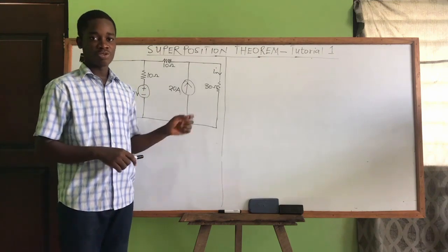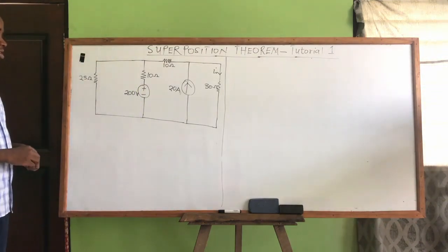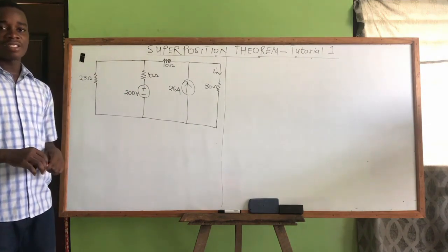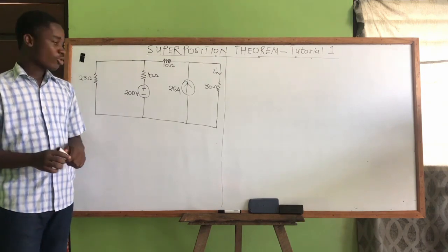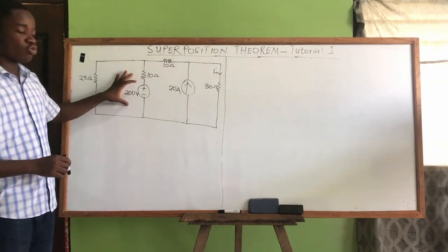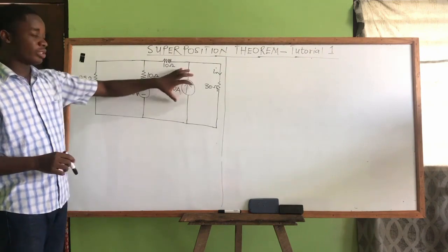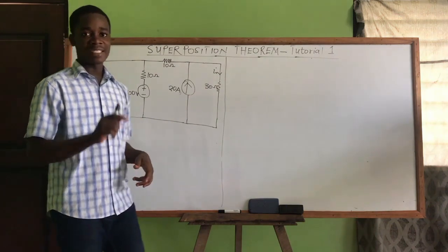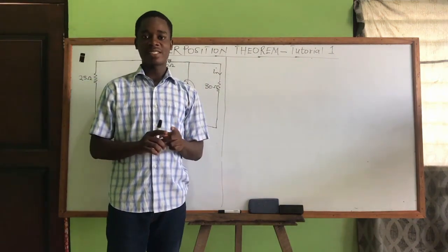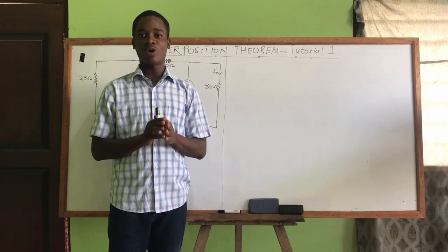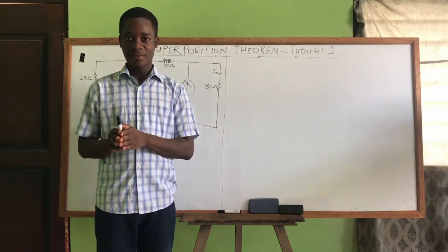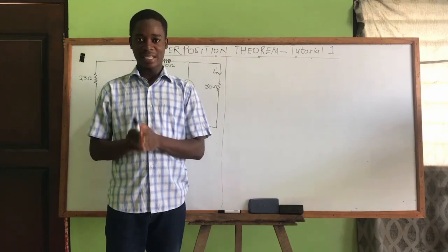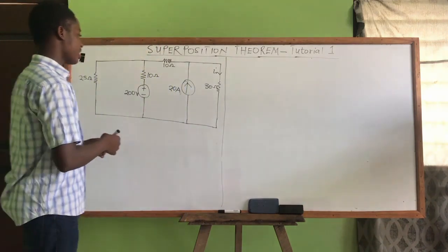In this question we have two sources: a voltage source and a current source. We can let either act first. If we let the 200 volts act alone, we turn off the current source. In superposition, whenever you are deactivating a current source, you represent it by an open circuit — you open that terminal.